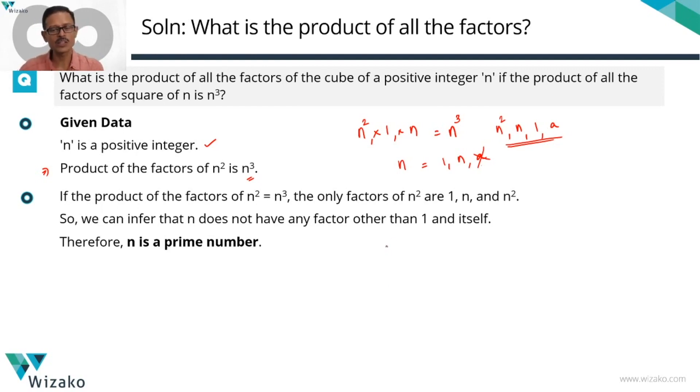Now that we know n is a prime number, what are all the factors of n cube? So we need to find out the product of all the factors of n cube. Factors of n cube: n cube is certainly a factor, n square is going to divide it, n will divide it and 1 will divide it.